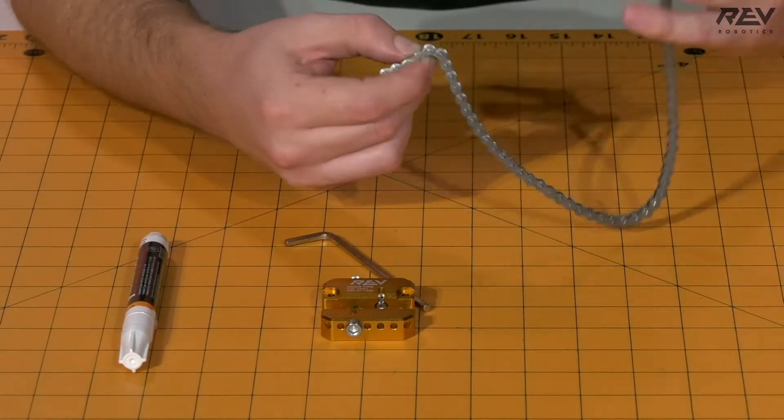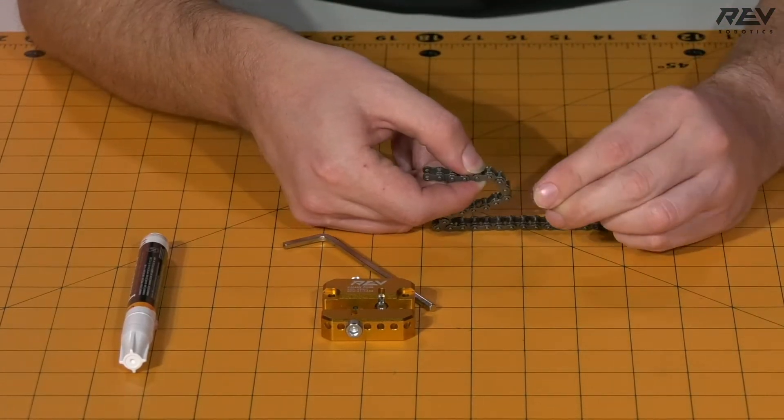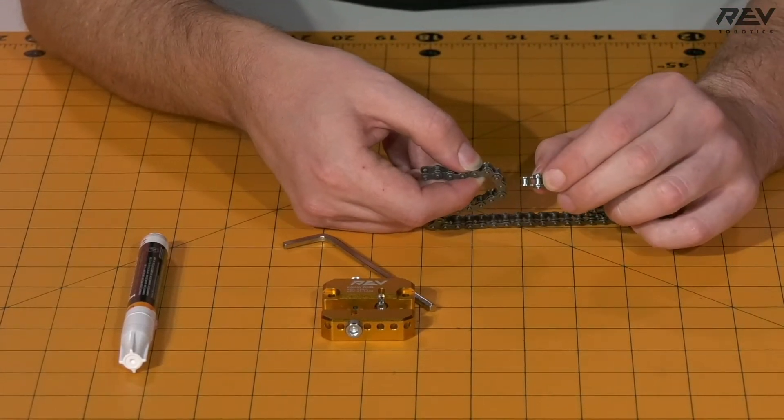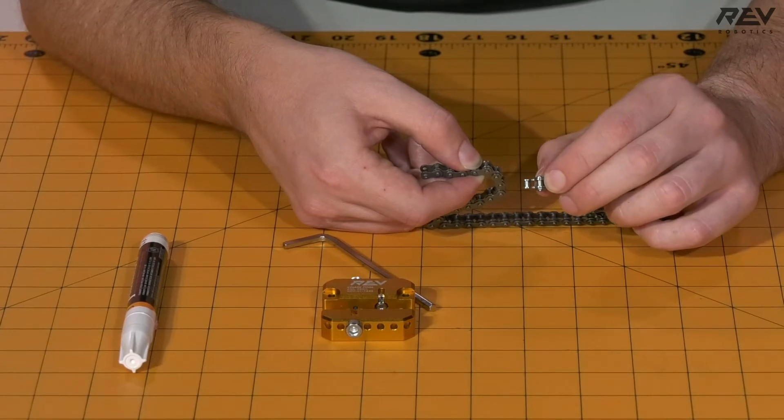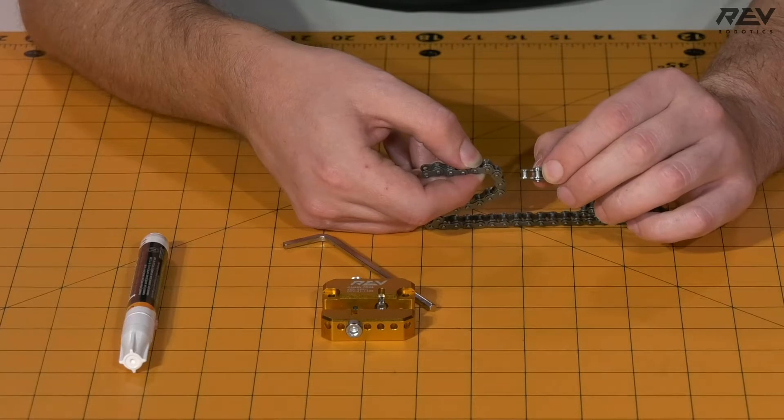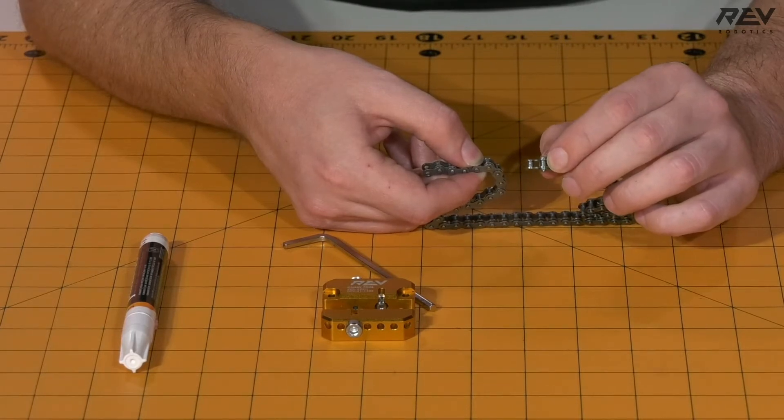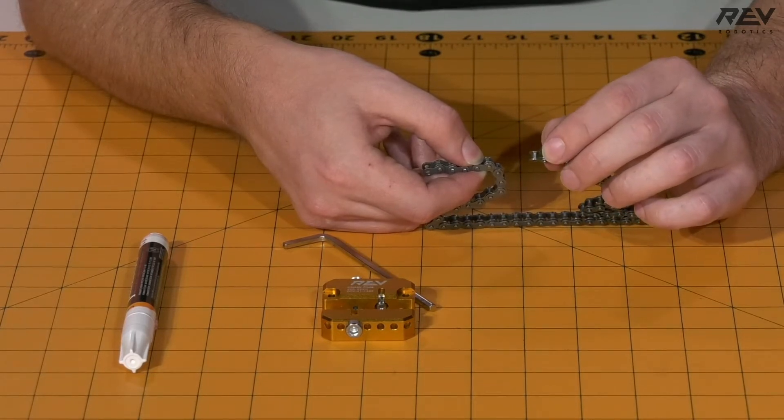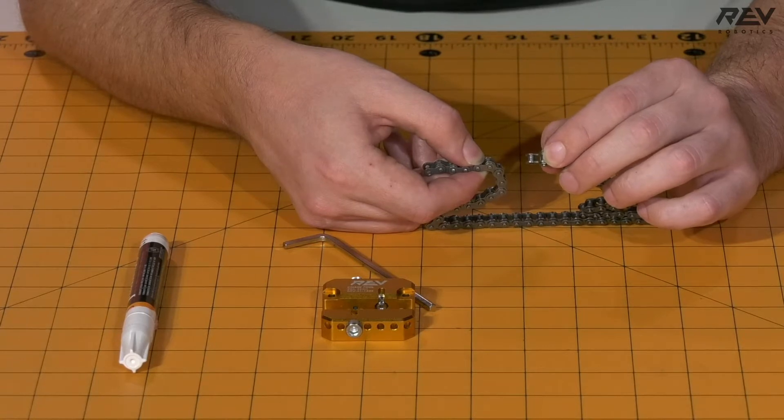Now when we are going ahead and reforming and breaking chain, we want to pay attention to the end that we have already broken so that we're able to connect the correct link on. So this is an inside link, so we need an outside link to be able to connect to it.